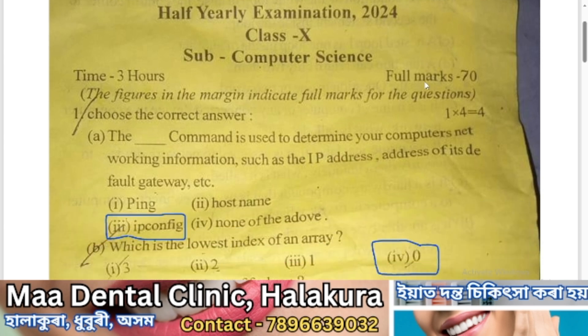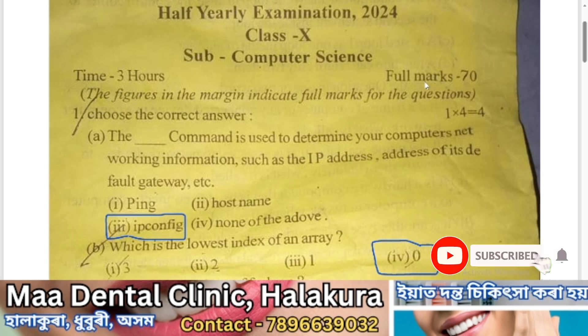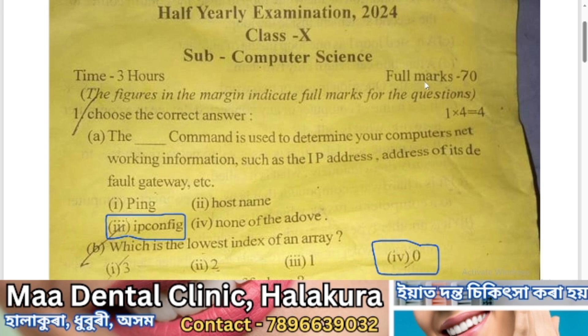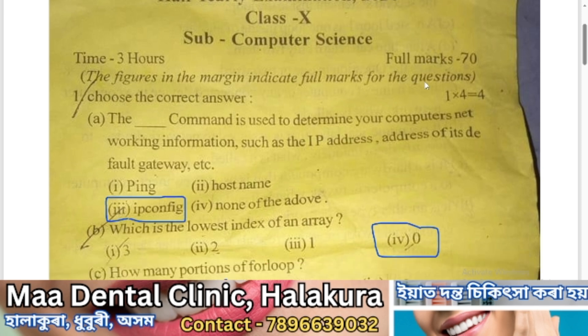Question number one: the ipconfig command is used to determine your computer's networking information such as IP address, address of its default gateway, etc. The answer is number 3: ipconfig.